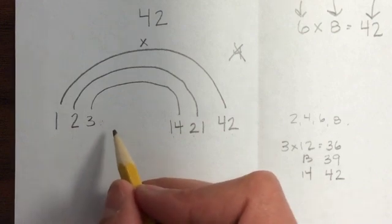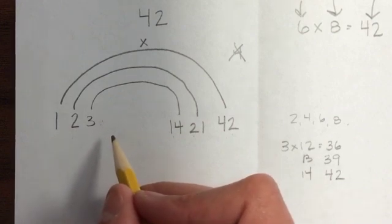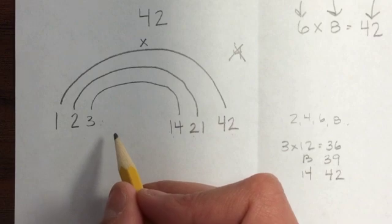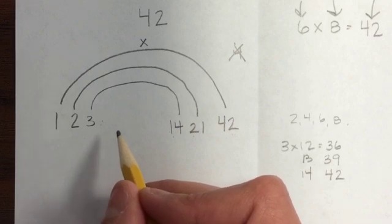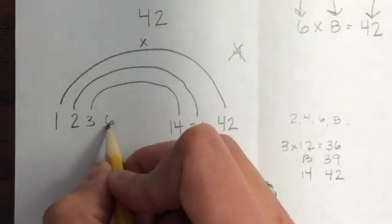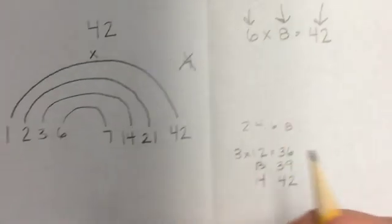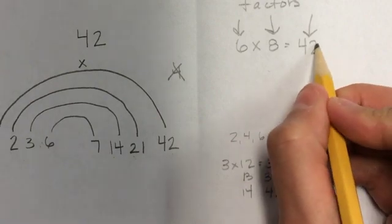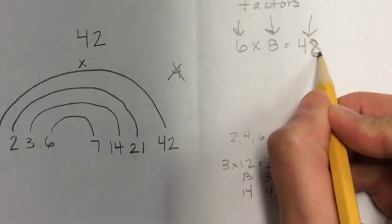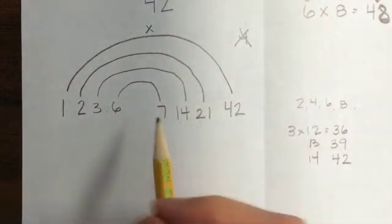So I'm going to try 5. Is 5 times anything 42? No. 6, 6 times anything 42? Yes, 6 times 7 is 42. I put 6 times 8 up here. Oh, that's 48. So 6 times 7.